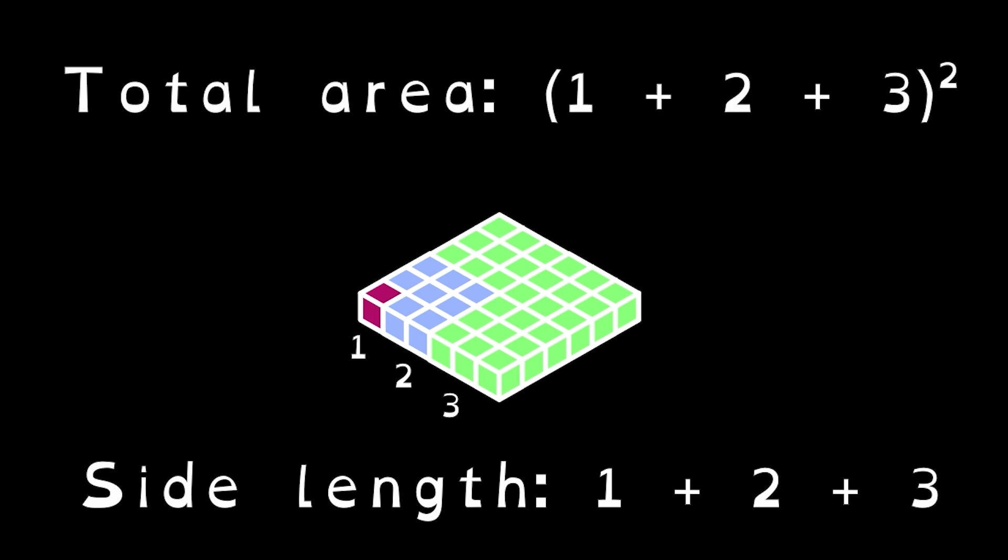First of all, let's rearrange these cubes. What I've formed here is a square. The side length of this square is 1 plus 2 plus 3. Thus, the total area is 1 plus 2 plus 3 squared.